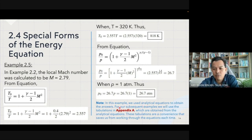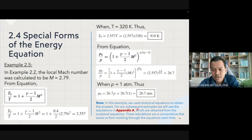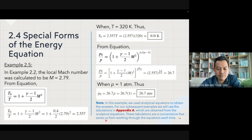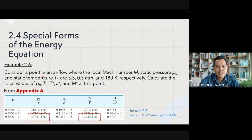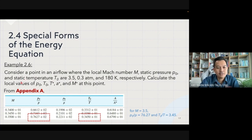In this example we used analytical equations to obtain the answer. In the subsequent Example 2.6 we will use tabulation from Appendix A of the Anderson textbook, which is derived from the same analytical equations. These tabulations save us from working through the equations each time. In Example 2.6, consider a point in the flow where the local Mach number is 3.5.